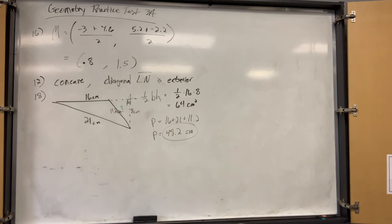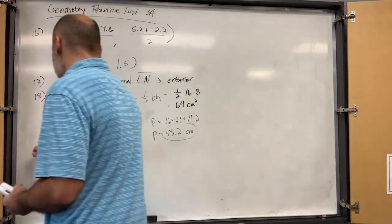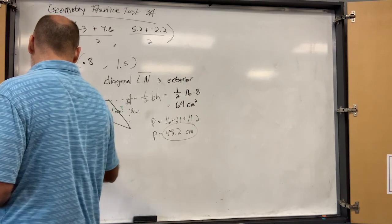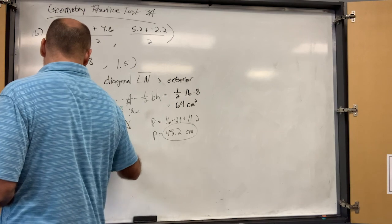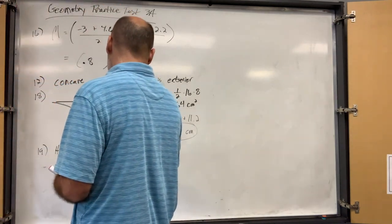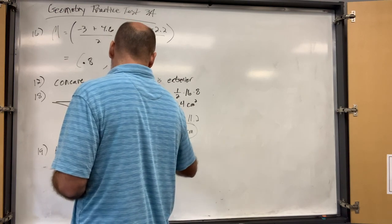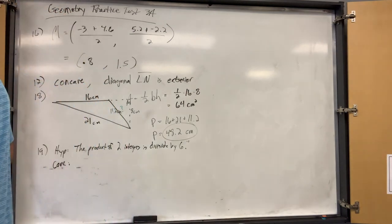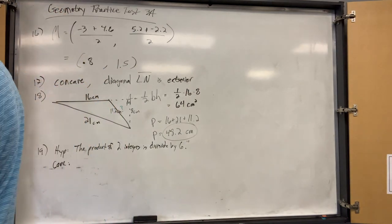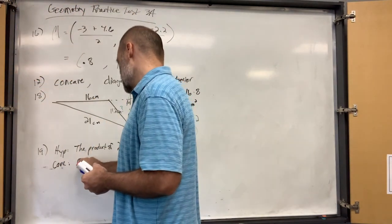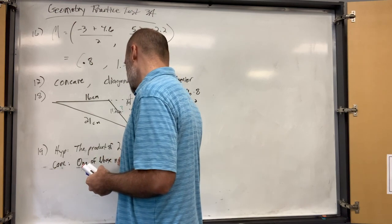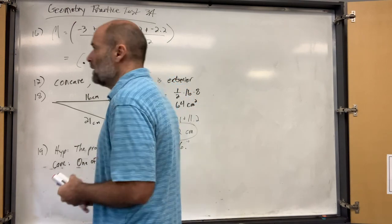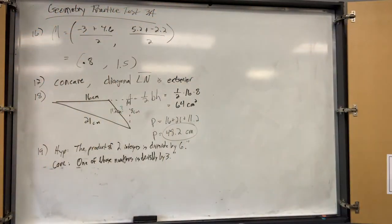Number nineteen: state the hypothesis and conclusion of this conjecture. Cover the word 'if' and state the hypothesis — the product of two integers is divisible by six. Then cover 'then' and state the conclusion.